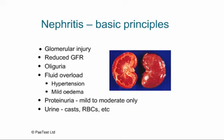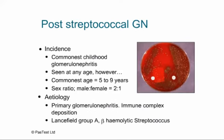The most common childhood glomerular nephritis is post-streptococcal glomerulonephritis, a good example of typical nephritis clinical features. It's seen at any age but is commonest in young school years, ages 5 to 9. It's commoner in males than females at a 2:1 ratio, and is a primary glomerular nephritis with immune complex deposition related to Lancefield Group A beta-haemolytic streptococci.